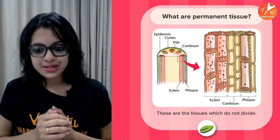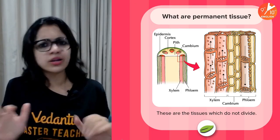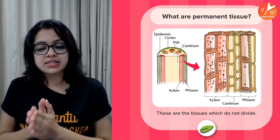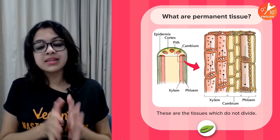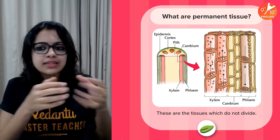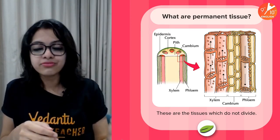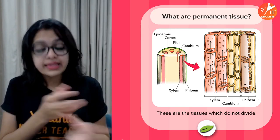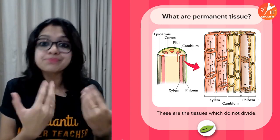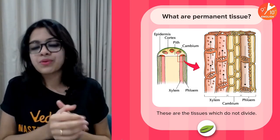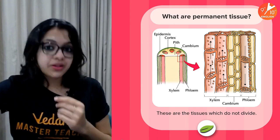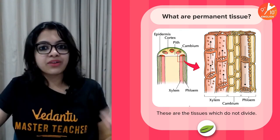Coming to permanent tissue — what exactly are permanent tissues? These are tissues which do not divide. Plant tissues can either be meristematic or permanent. Meristematic tissues constantly divide; permanent tissues start off dividing but at a point in time they stop dividing and take up a serious permanent role in the plant's life.